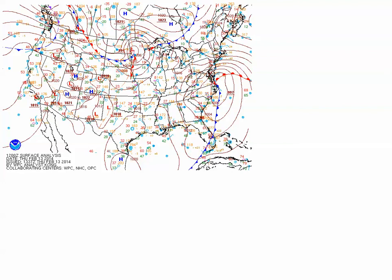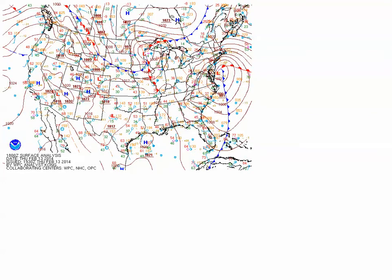Now let's fast forward six hours to 18Z, and the low is even stronger now, around 991 millibars. The center of the low has moved northward off the Delaware coast and we just see the very beginning of an occluded front forming. It's hard to see, but the beginning of the occluded front signals that the low is starting to reach maturity. The cold front is trailing southward offshore while the warm front extends toward the east.